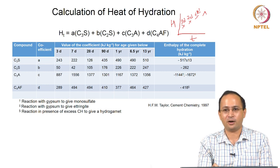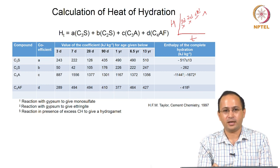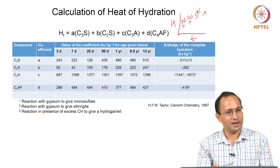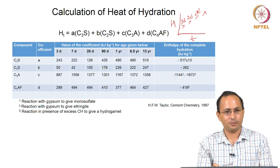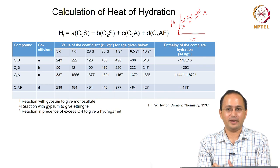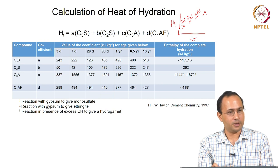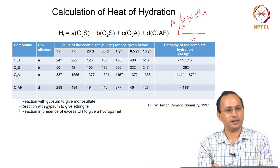That is how they measured heat of hydration at later ages like 90 days, 1 year, or even 13 years. They prepared samples, collected them after 13 years, calculated the heat of solution, and by subtracting it from the heat of solution of 100% cement, they could calculate the heat of hydration.